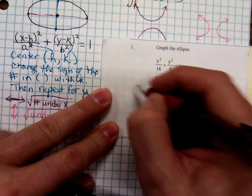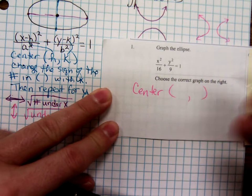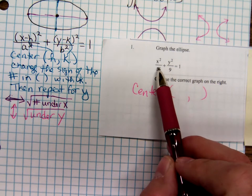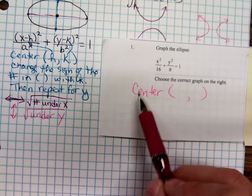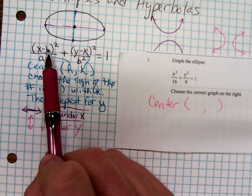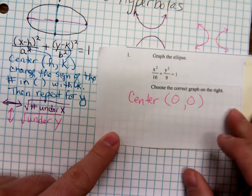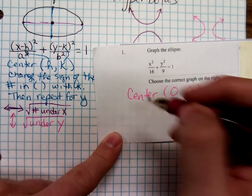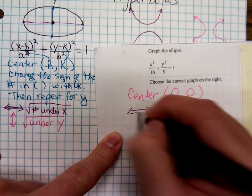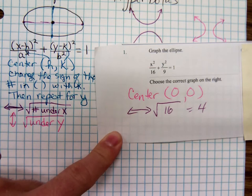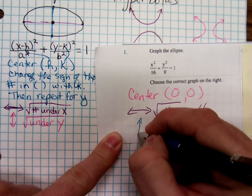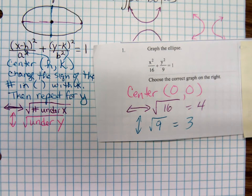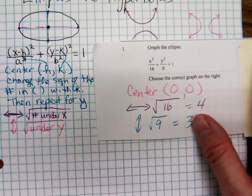So we're told to graph the ellipse. In order to graph it, we've got to know the center. Notice there are no parentheses with the x squared and the y squared — so just like with circles, if there are no parentheses, we assume the center is (0, 0). Then you'll move left and right the square root of the number under x, so left and right 4. Then move up and down the square root of the number under y, so up and down 3. I'm going to graph that ellipse.